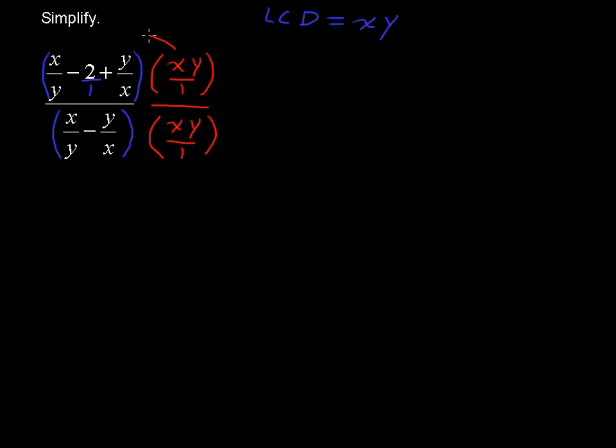Now I'm going to multiply this xy times x over y, and I want to show what happens with that over here. x over y times xy. Well, these y's will cancel out, and so you're left with x times x. So I'm going to write that down in the bottom here. x times x, or x squared. Alright, negative 2 times xy. Well, that's just negative 2xy.